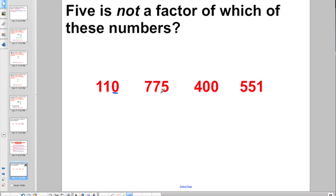So let's put this into play. Well, this guy's ending in 0, this guy's ending in 5, this guy's ending in a 0. And even though I have two 5s here, he ends in 1. So 5 is not a factor of 551.